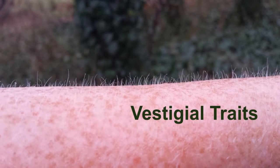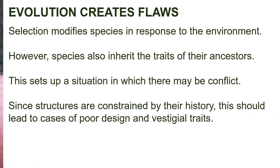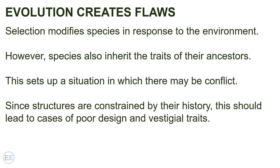What are vestigial traits and how do they provide strong evidence for evolution? Evolution has created an amazing array of living things, but it can also create flaws. Natural selection modifies species in response to their environment, but species also inherit the traits of their ancestors, and those ancestors may have evolved their traits in a very different environment. This sets up a situation in which there may be a conflict.